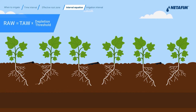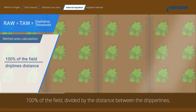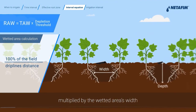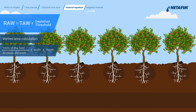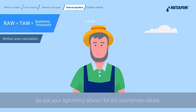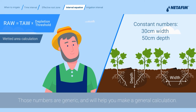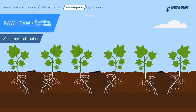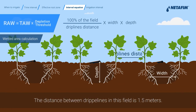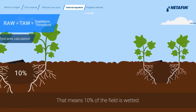Now we narrow this number to the effective root zone, also defined as the wetted area. To do this, we need to calculate the percentage of wetted area in the field: 100% of the field divided by the distance between the dripper lines, multiplied by the wetted area's width and depth. The width and depth of the wetted area change according to each specific crop and condition, so ask your agronomy advisor for the appropriate values. Otherwise, you can use the following constant numbers: 30 centimeters width and 50 centimeters depth. Those numbers are generic and will help you make a general calculation. Consult an agronomy advisor for specific values to achieve precise results. The distance between dripper lines in this field is 1.5 meters. So, 100 divided by 1.5, multiplied by 0.3, multiplied by 0.5, equals 10 — meaning 10% of the field is wetted.